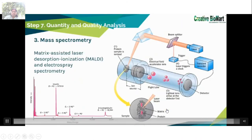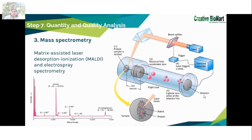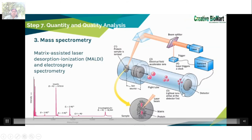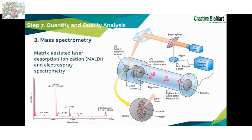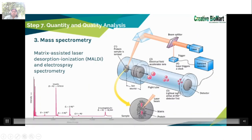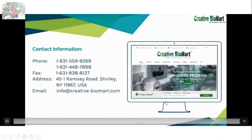Finally, mass spectrometry can determine the target protein mass more precisely. These methods are called matrix-assisted laser desorption ionization (MALDI) and electrospray spectrometry. Using these methods, we can learn more about our target protein.